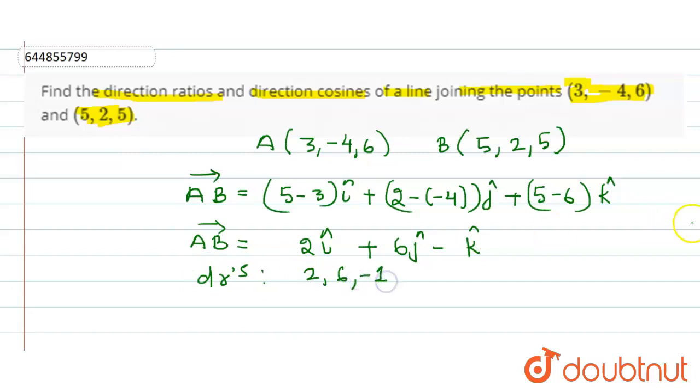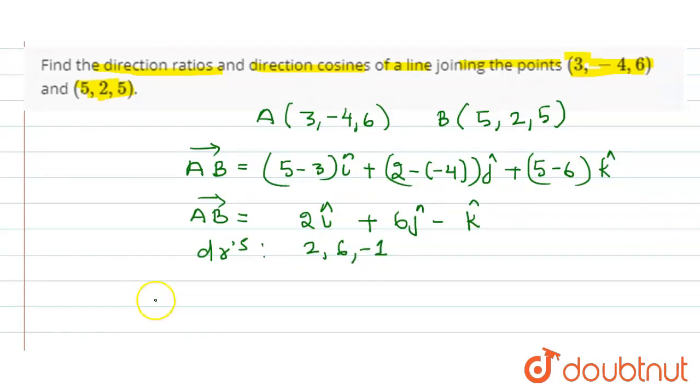And if we want to calculate the value of the direction cosines, then the direction cosine will be equal to 2 upon the magnitude of the vector AB, that is square root of 2 squared plus 6 squared plus 1 squared.